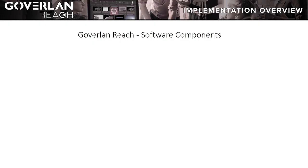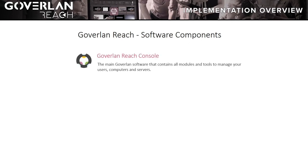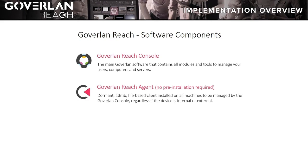Goverland Reach has three software components. The Goverland Reach Console, which contains all the extensive tool sets you will use daily to manage your machines. The Goverland Reach Agent, a dormant 13MB client that the Goverland Console will deploy to the machines that you will manage.